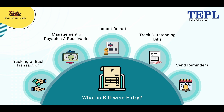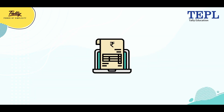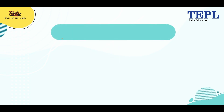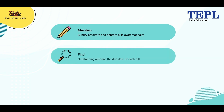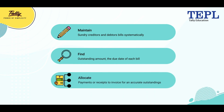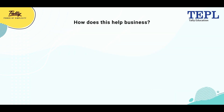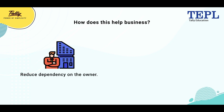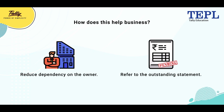Bill-wise entry helps in managing outstandings efficiently. It assists in various ways such as maintaining sundry creditors and data systematically, finding the outstanding amount and due date of each bill, and allocating payments or receipts to the correct invoice for maintaining an accurate account of outstandings. This reduces dependency on the business owner, because you can refer to the outstanding statement and know if you are liable to pay or receive it.